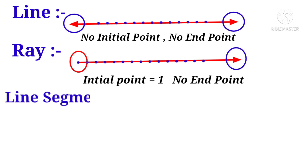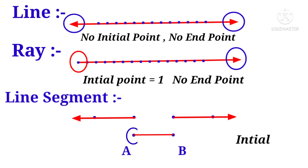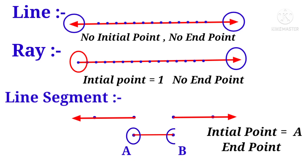Now let us see what is a line segment. Draw a line. Out of the infinite number of points on a line, let us take four points. Now cut at the second point and third point. Then a part of the line will come outside. Name the initial point as A and the final point as B. So AB is a line segment — it is nothing but a part of a line.